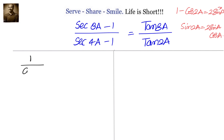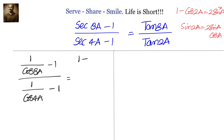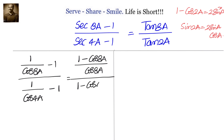In the first step we'll convert the left hand side into cos, so we write 1/cos8a - 1 divided by 1/cos4a - 1. Let's simplify by taking LCM. We will have (1 - cos8a) / cos8a divided by (1 - cos4a) / cos4a.